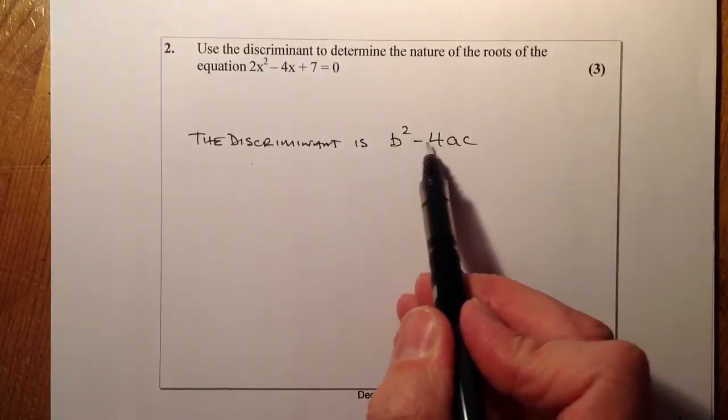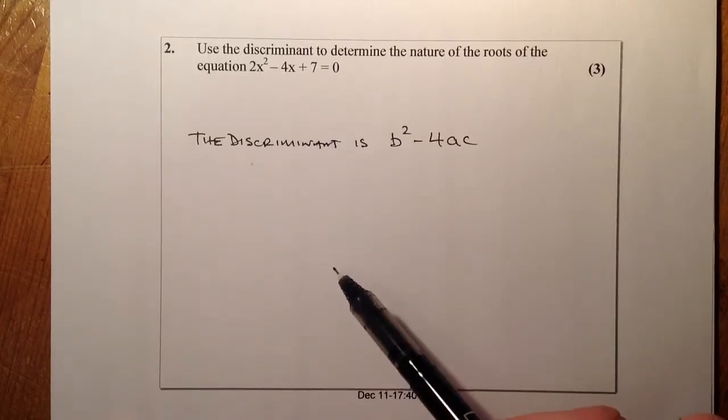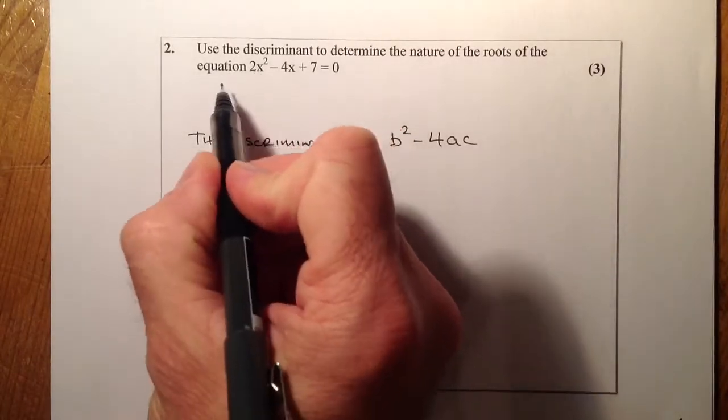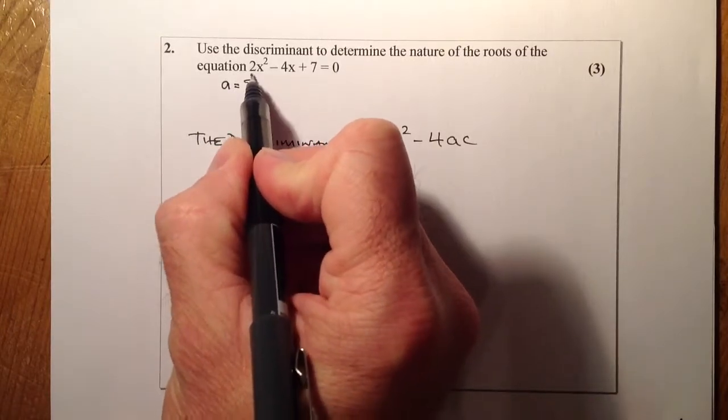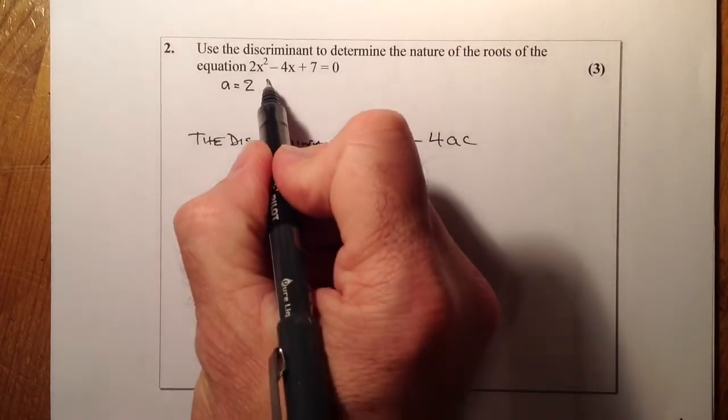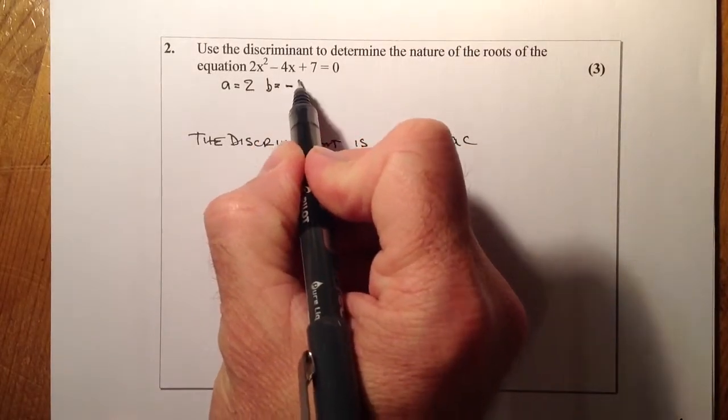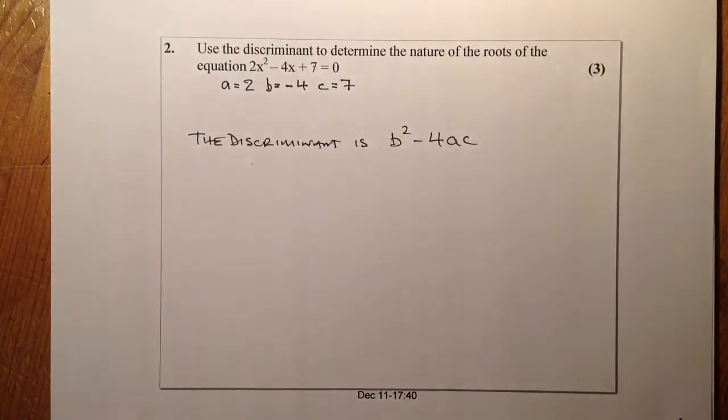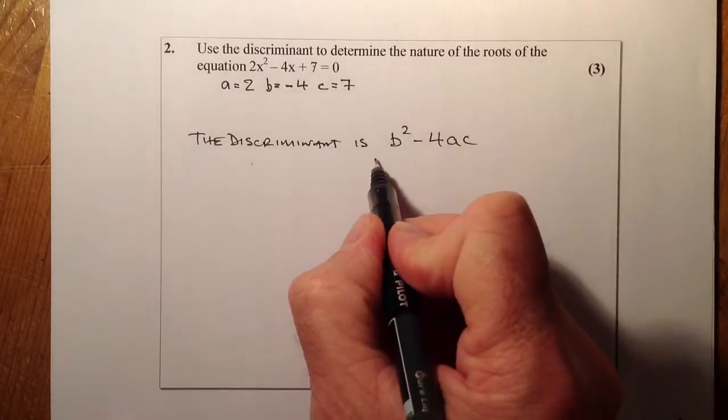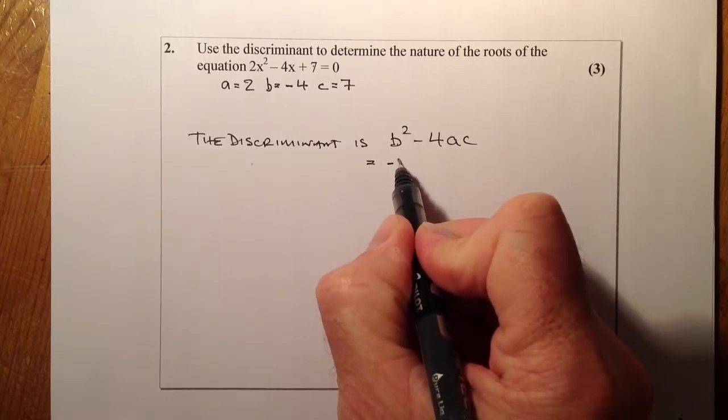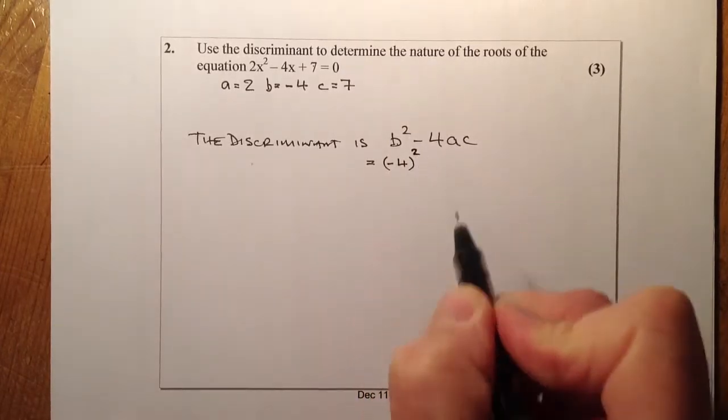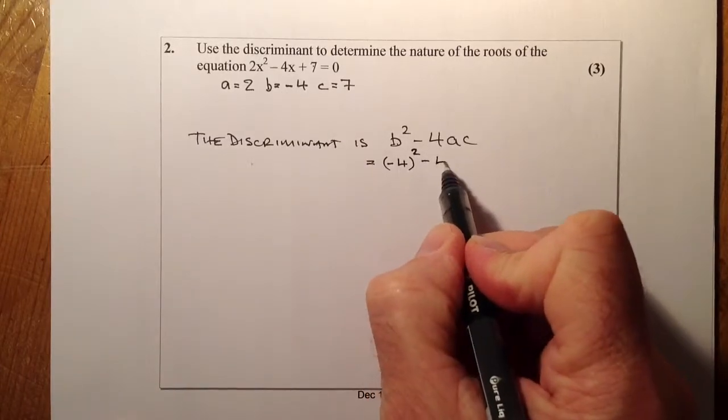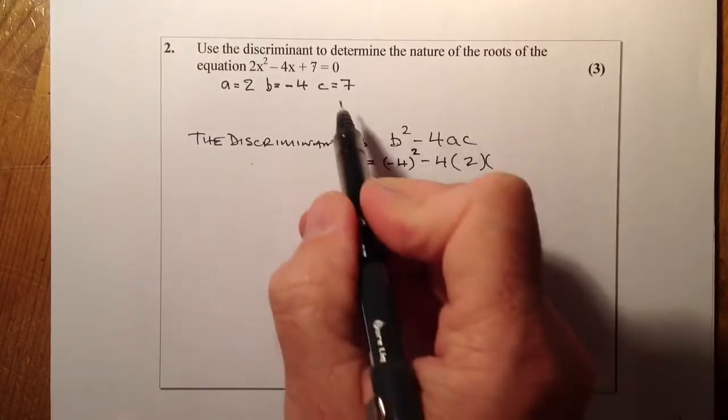The letters there correspond to the coefficients from the equation up above. So up above, I know that this number here, a is going to be 2, so that's where I'm going to get the a value from. b is going to be the next coefficient, which is minus 4, and c is going to be equal to 7. All I'm going to do is I'm going to just calculate the discriminant, which is b squared minus 4ac, and that should tell me something about the nature of the roots. Let's substitute our values in. So for b squared, I'm going to put minus 4 in the bracket, and it's squared. That's from there. Minus 4 times a, which is 2, and for c, it's 7.